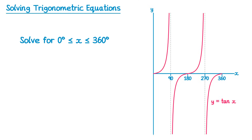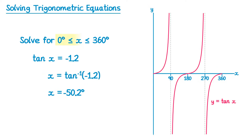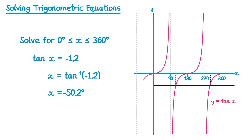Like that tricky equation with sine, if you make tan equal to a negative value, we have a similar problem again. Inverse tan of negative 1.2 gives us negative 50.2, which isn't between 0 and 360 degrees. So we need to extend the tan graph backwards — we'll draw the horizontal line for negative 1.2 on first. Extending the graph backwards, we'll have another asymptote at negative 90 degrees, and we can see the solution we've got is at negative 50.2.